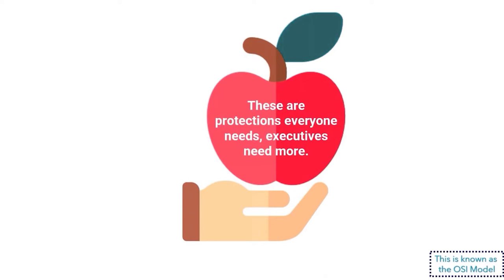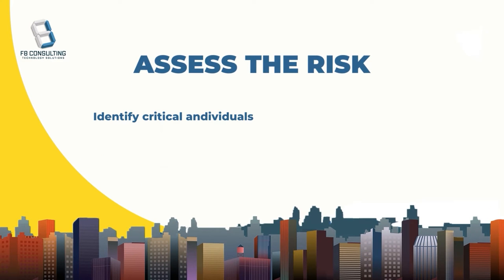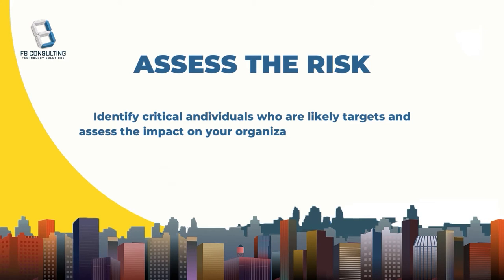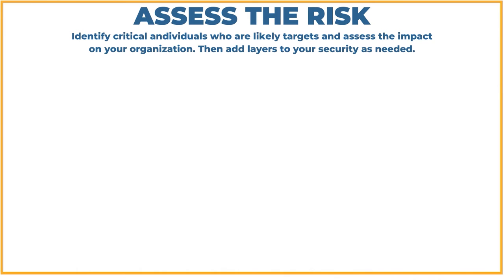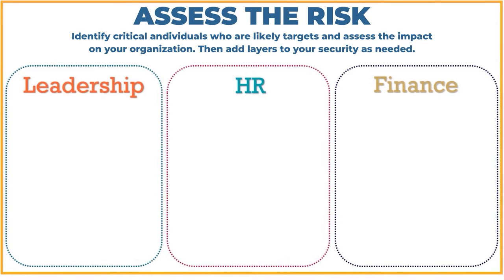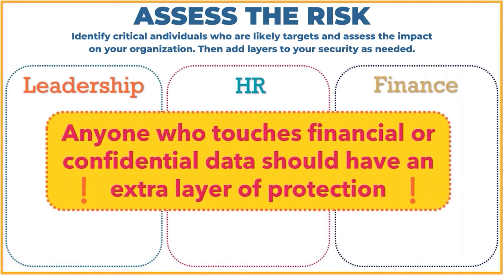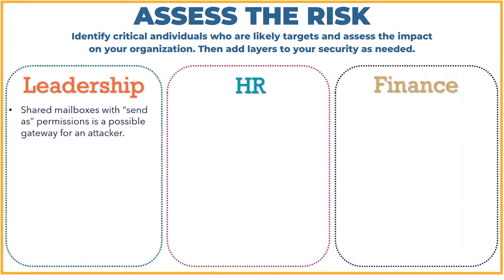Identifying key individuals is critical to assess the risk for your organization — who are likely targets — and then we can assess the impact that a breach would have, so we can add layers to those accounts as necessary. Those in leadership roles, which would include owners, executives, managers and department heads, as well as HR and finance, are three areas where we feel most security is needed. Shared mailboxes with send-as permissions is a possible gateway for an attacker, as it would allow those with access to reply to emails requesting account information or confirming transfers.